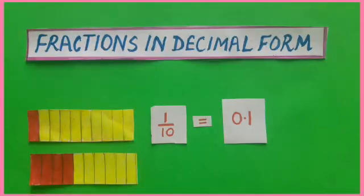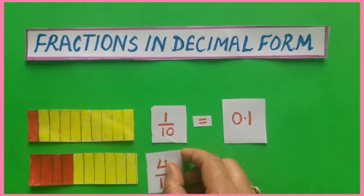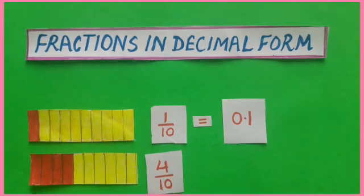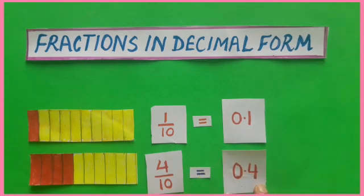Here is another example. This is also a rectangle and it is divided into 10 equal parts. In this, 4 parts are colored red. The fraction of this is 4 by 10, and this is equal to its decimal form as 0.4.